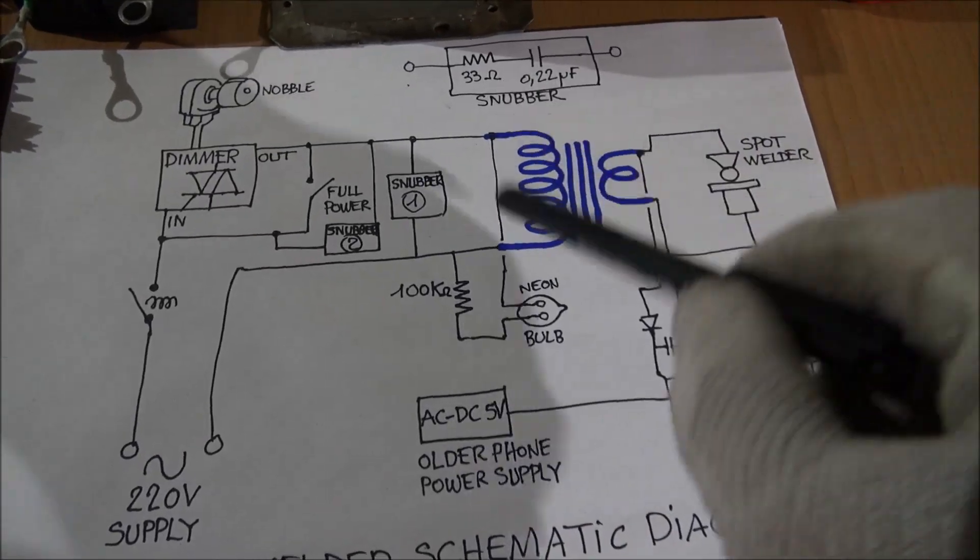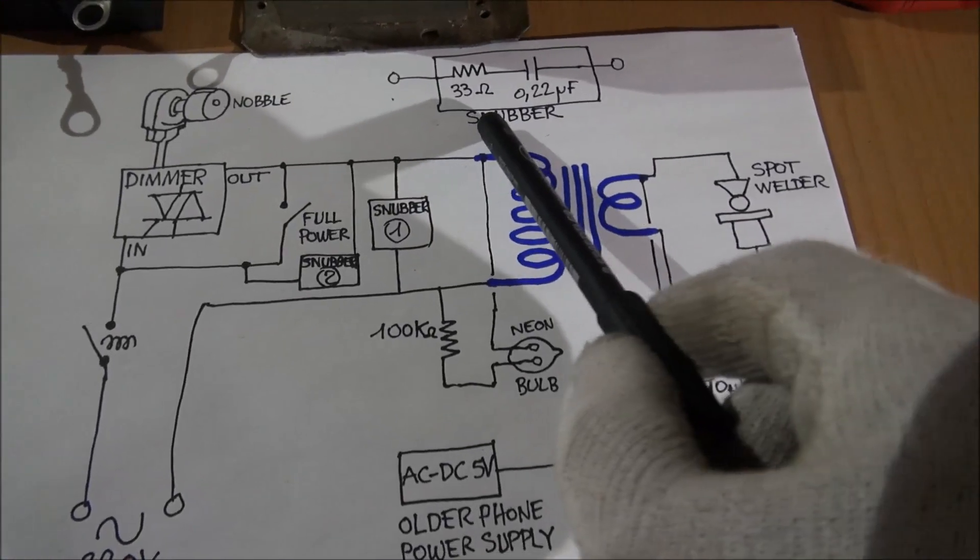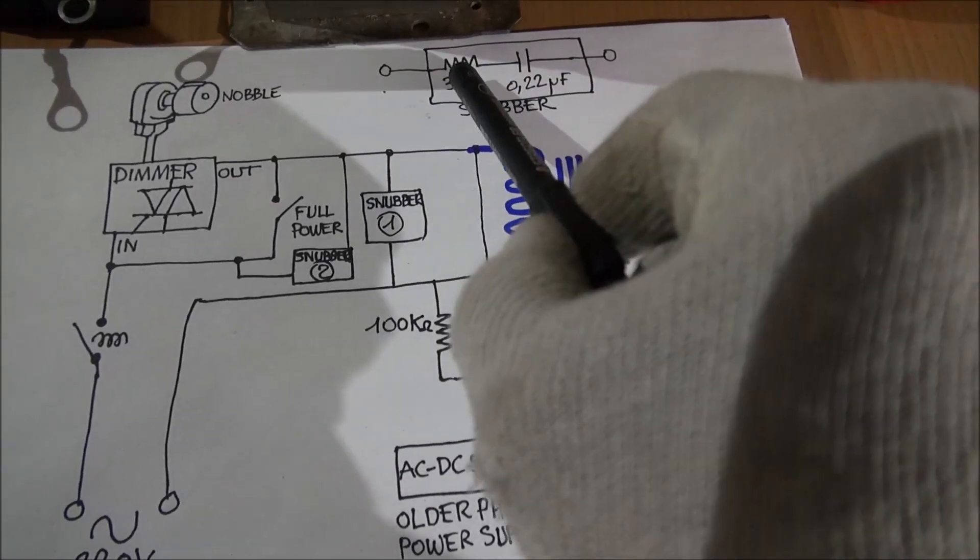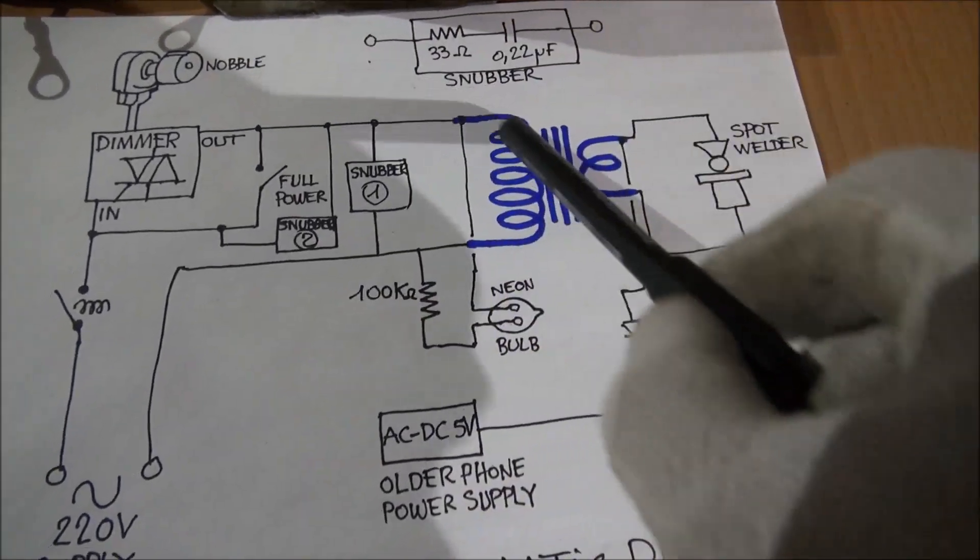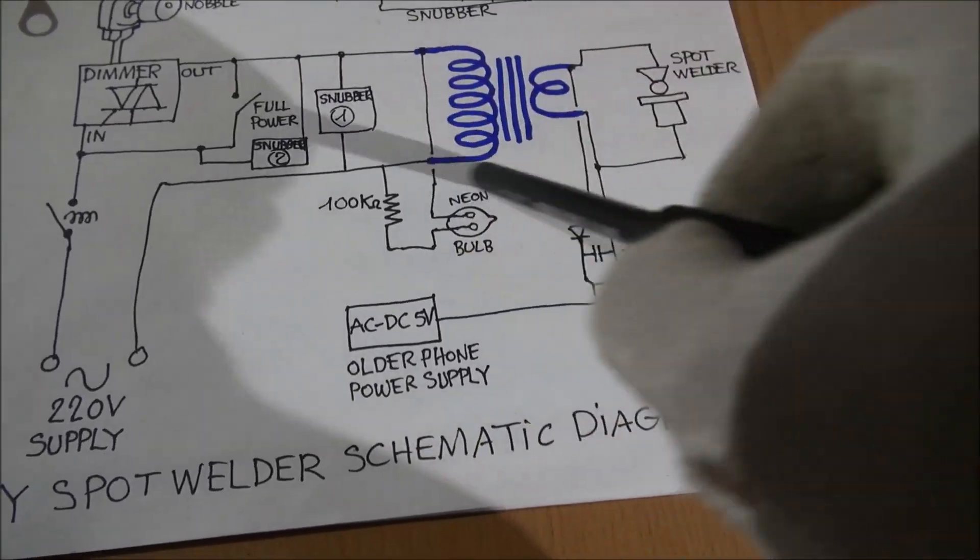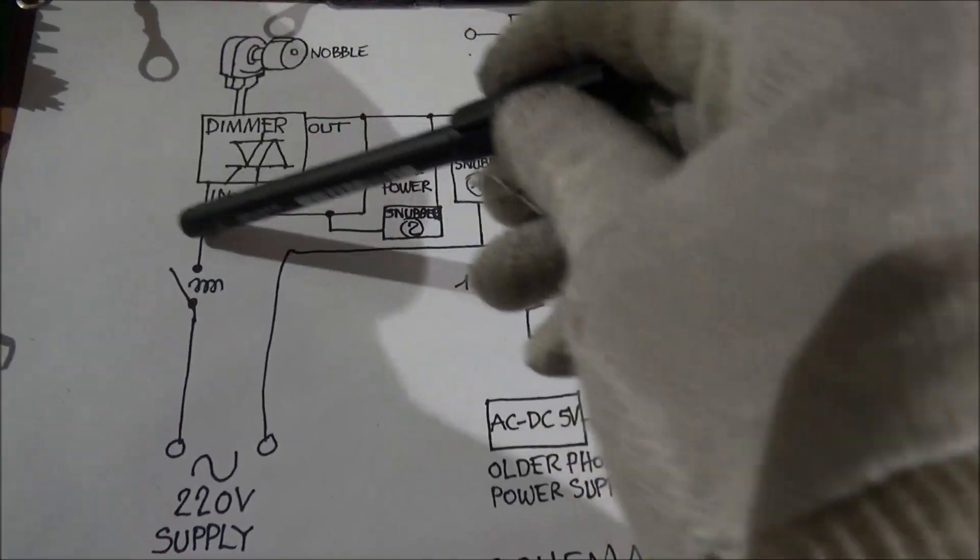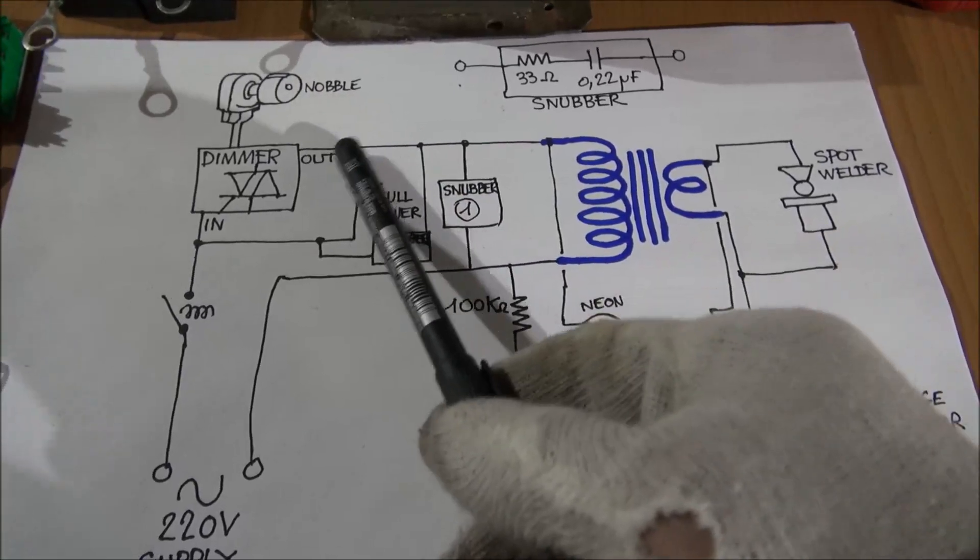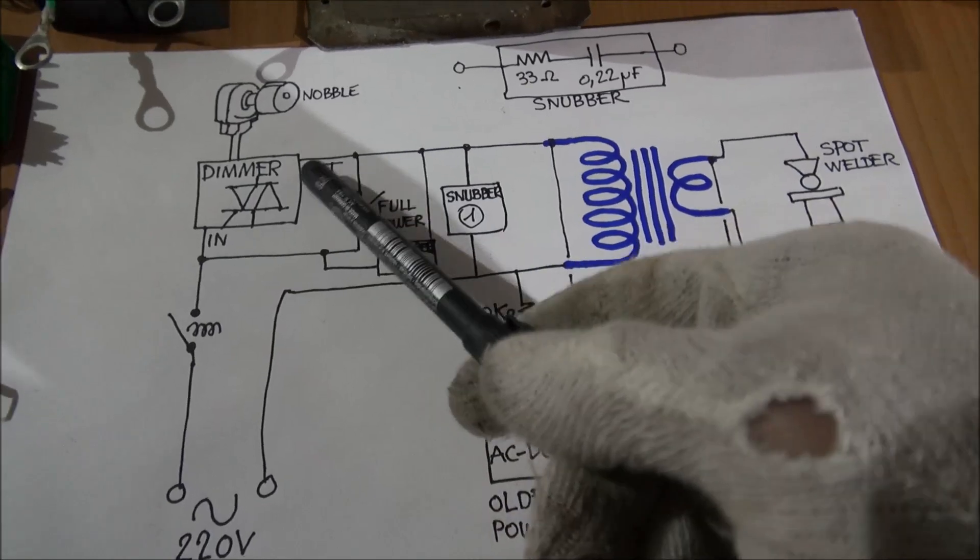To realize this spot welder, you must have a very interesting component. This component is called a snubber. The snubber is made by a resistor and capacitor in series to prevent any noise coming from the primary of the transformer from going inside the dimmer and perturbing the dimmer, so the dimmer doesn't stay blocked on.